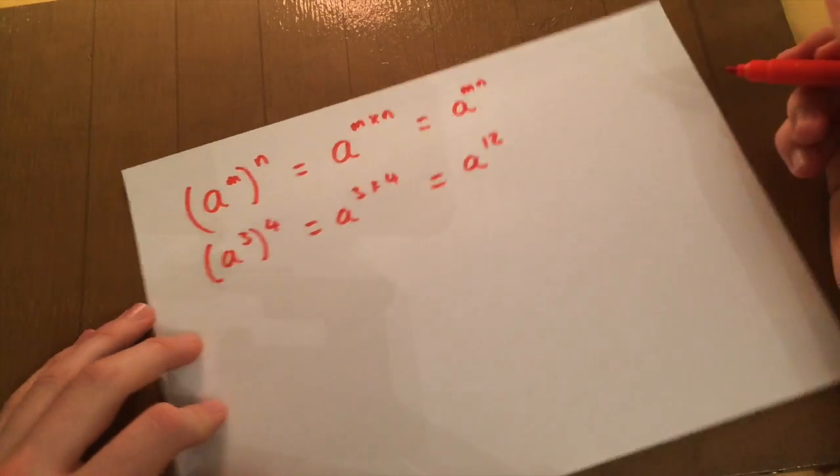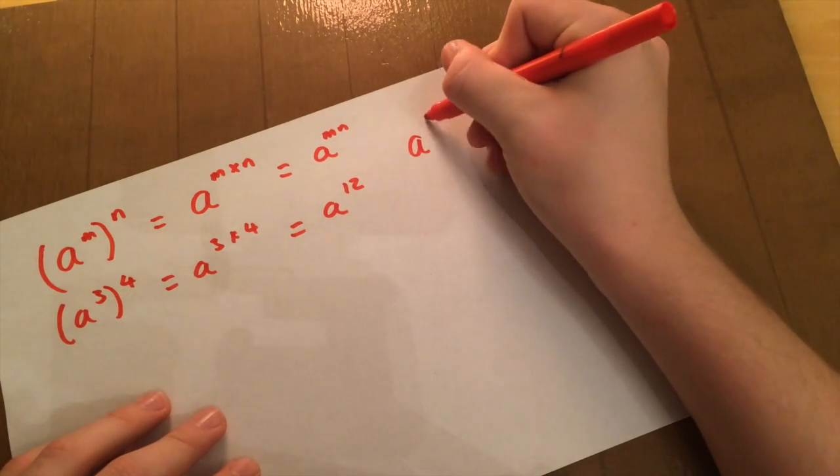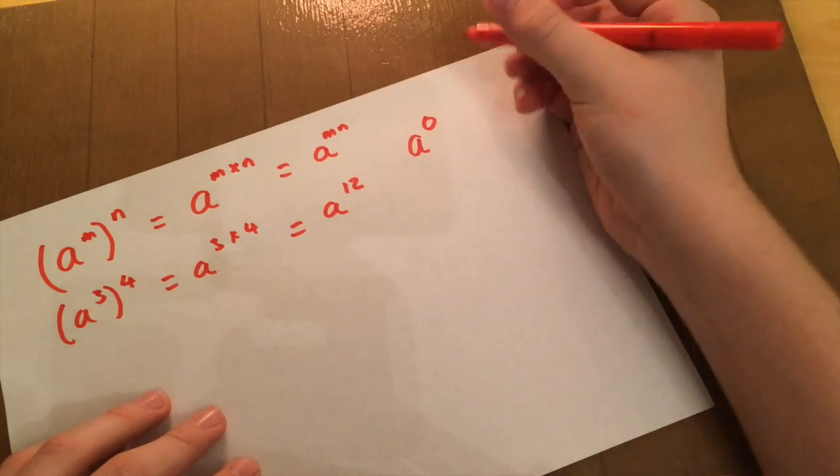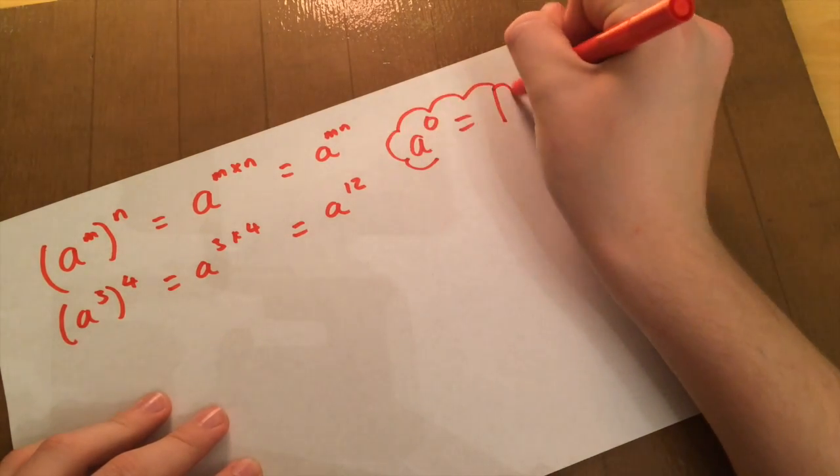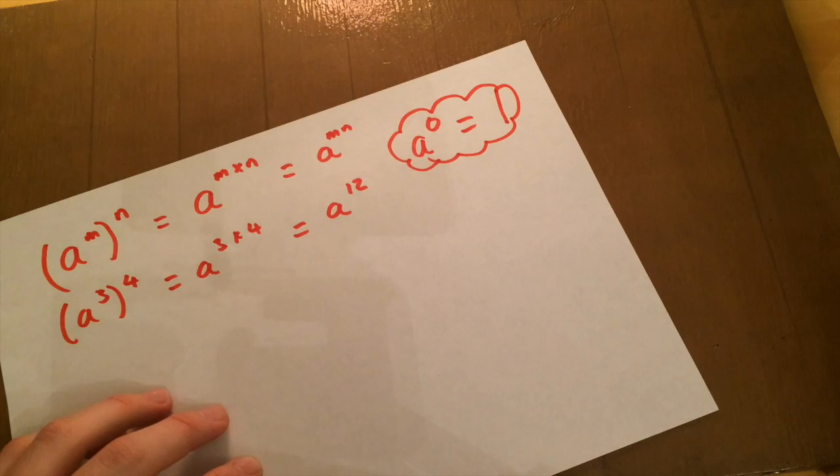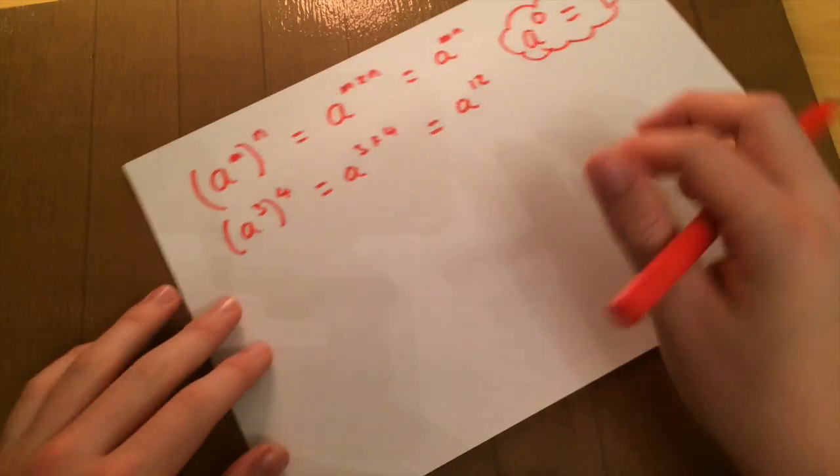And then finally, the most simple power rule you'll ever know is A to the 0, bearing in mind A is anything, equals 1. So that is officially my favourite rule in the whole of maths. Alright, moving on to, carrying on with the bracket theme now.